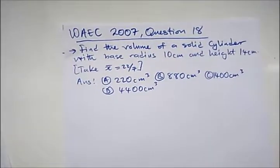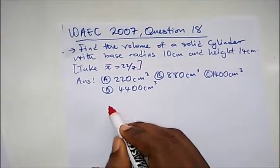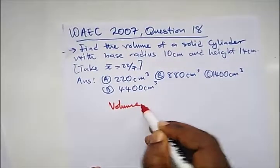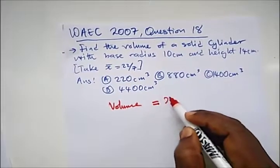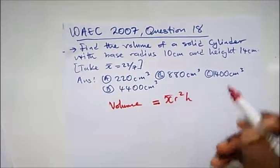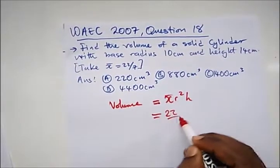Our next question from WAEC 2007, question 18, says find the volume of a solid cylinder with base radius 10 centimeters, height 14. What is the volume of a cylinder? The volume is πr²h.